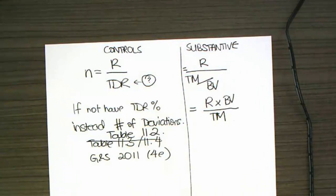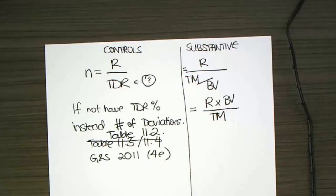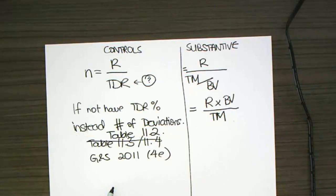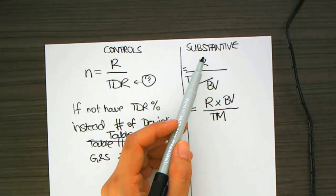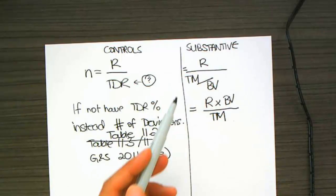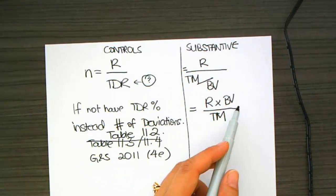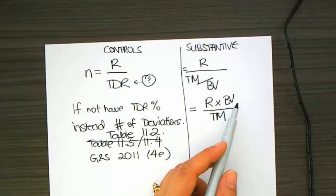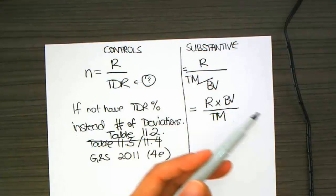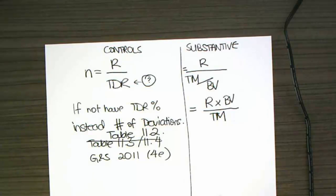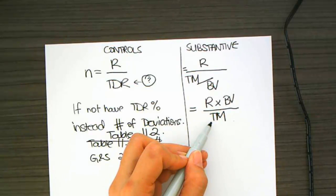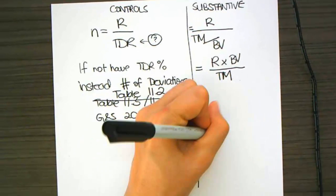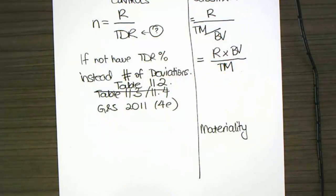Now, typically, you'll have materiality at a couple of different levels. You'll have materiality for the overall set of financial statements. And then, you'll have smaller amounts for individual components of the financial statements. And that's going to be customized. Areas of higher control or inherent risk might have lower levels of materiality. So, there'll be a materiality level for an individual account that we call the tolerable misstatement here.